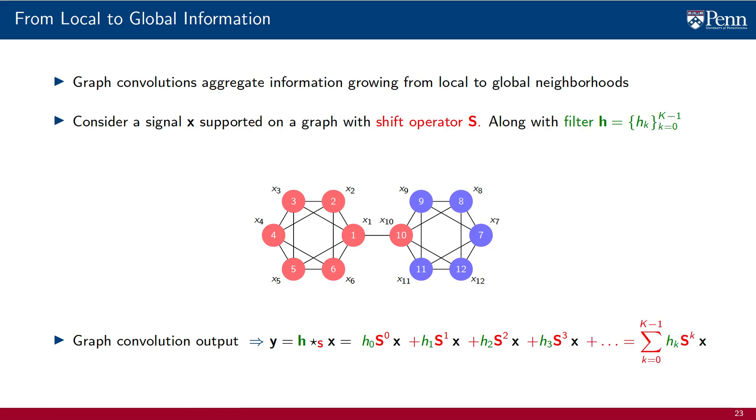To complete the graph convolution, we keep adding components of the diffusion sequence scaled by their respective filter coefficients until we reach the order of the filter. The last entry is the K-1 element of the diffusion sequence scaled by coefficient h_(K-1).